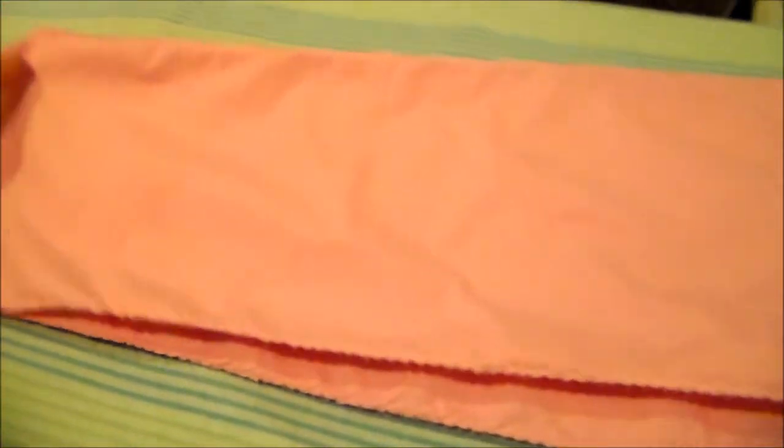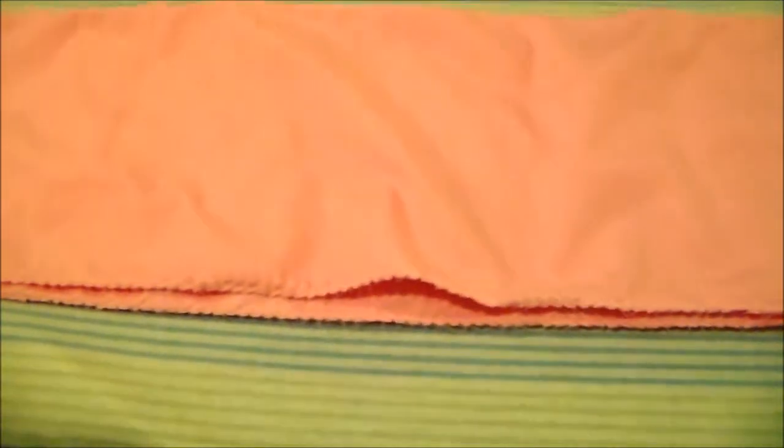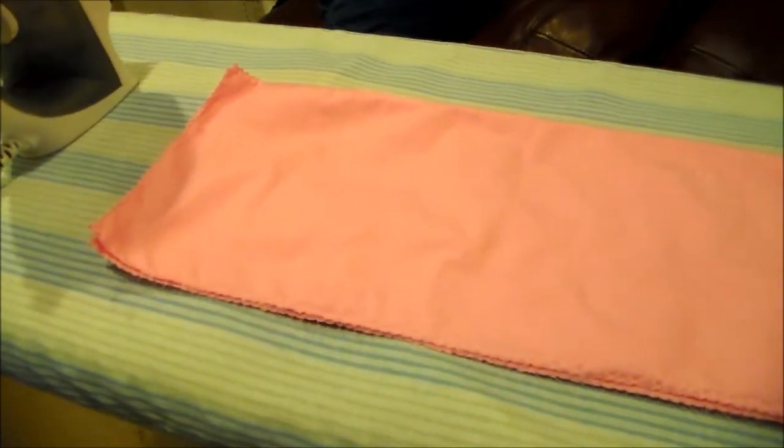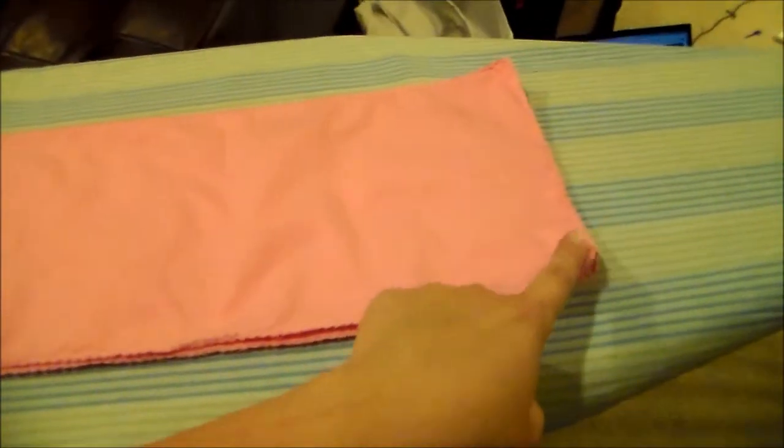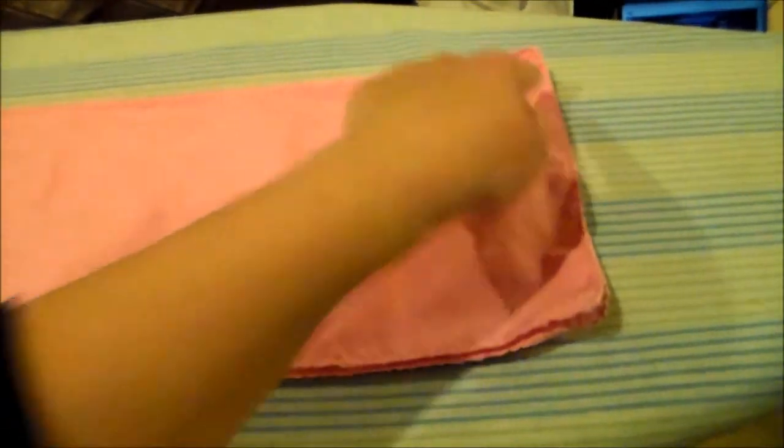Then we're going to take the other one and put it on top. And we're going to sew it like the obi, except we're going to start from the bottom, sew all the way around and across this time, and then down.